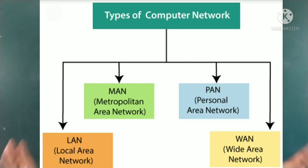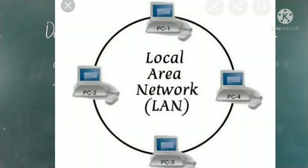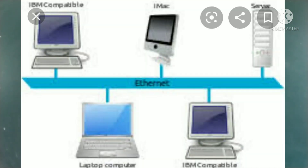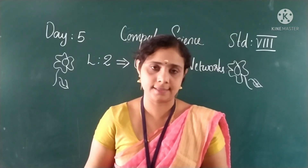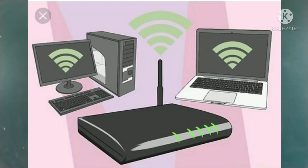First is local area network. A local area network, or LAN, consists of a computer network at a small site, single site, or building. This is useful for sharing resources such as data sharing or hardware devices like printers. A LAN can be built with relatively inexpensive hardware devices such as hubs, network adapters, and ethernet cables. The smallest LAN may have only two computers, but larger LANs can accommodate thousands of computers.